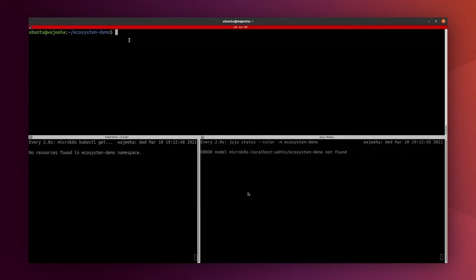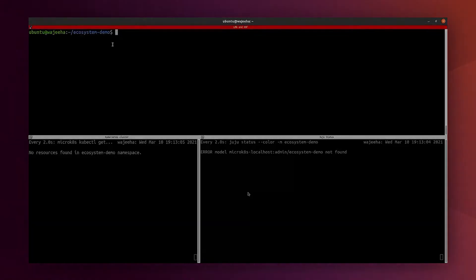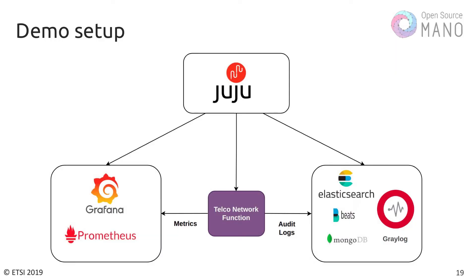Here is my Kubernetes cluster deployed. We can see the Juju status in parallel and here we will deploy our KNF and LMS stack. Juju is the application modeling tool that allows you to deploy, configure, and scale your application. It needs a controller and model to work. The model is a set of applications managed by the Juju controller. We will deploy the Juju controller, add a model, and deploy Grafana and Prometheus first. We will do the monitoring part first, then jump to the logging part.